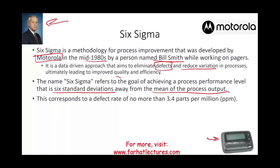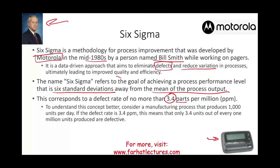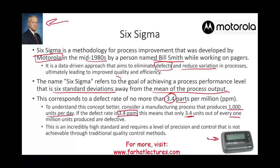So what does that mean? It corresponds to a defect rate of no more than 3.4 parts per million. So if you are producing a million units, what's acceptable is only 3.4 defective parts per million. To understand this concept with numbers: let's assume a company is producing 1,000 units per day. If the defect rate is 3.4 per million, this means only 3.4 units out of every 1 million units produced are defective — the vast majority are good, not defective. This is an incredibly high standard that requires a level of precision and control not achievable through traditional quality control methods.